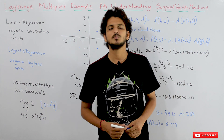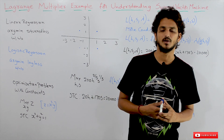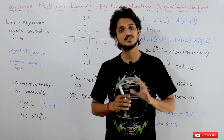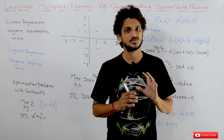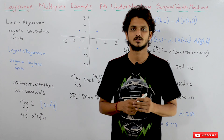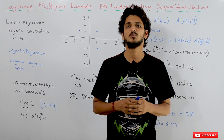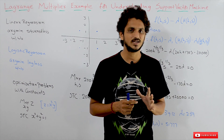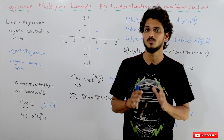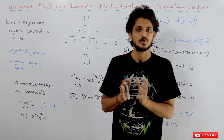In this class we will discuss about a Lagrange Multiplier example. This example will help us a lot in understanding support vector machines. In our previous classes we already discussed about gradient descent and how gradient descent helps in solving optimization problems.